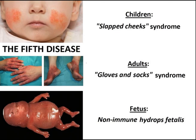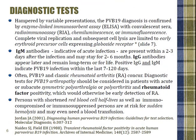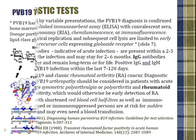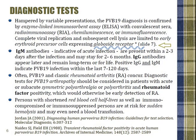The fetal complications will be discussed later. Age-adjusted prevalence is presented; the disease is highly contagious. Diagnostic tests include common serology tests. Some authors also suggest checking the rheumatoid factor in infected adults with arthropathy. I will move to the next slide to clarify why I placed an asterisk sign when mentioning the globoside receptor.